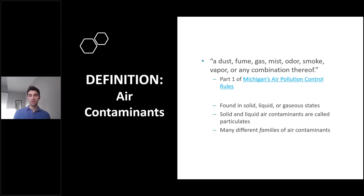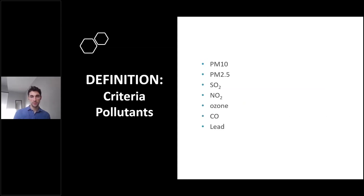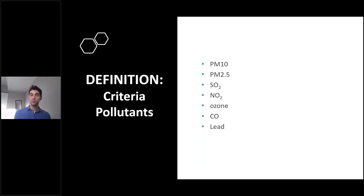One family of air contaminants is referred to as criteria pollutants. These include particulate matter equal to or less than 10 microns in diameter, known as PM10, and particulate matter equal to or less than 2.5 microns in diameter, or PM2.5. In addition, we have sulfur dioxide (SO2), nitrogen dioxide (NO2), ozone, carbon monoxide, and lead.